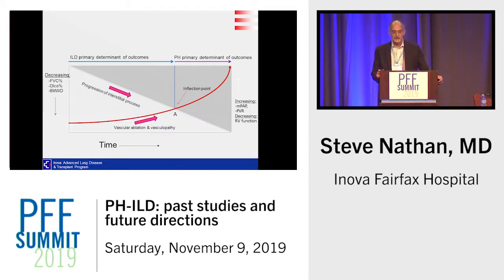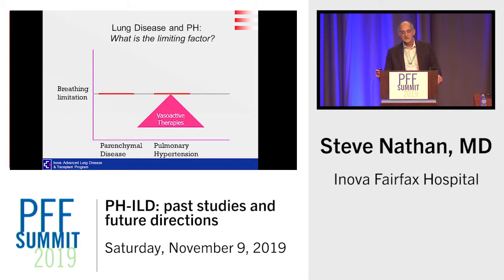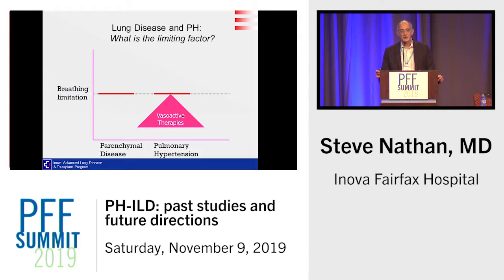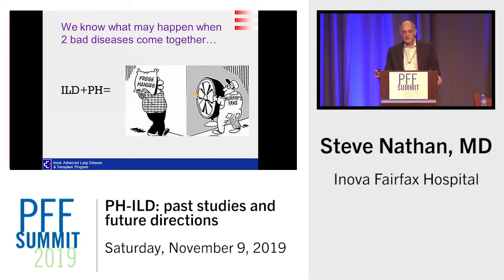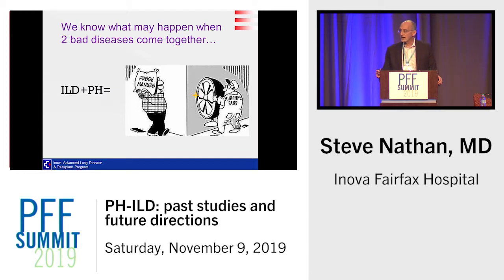This demonstrates the concept that the ILD may be driving outcomes initially, but patients reach an inflection point where pulmonary hypertension becomes the driver. The question is: can we help patients with both breathing limitation from interstitial lung disease and pulmonary hypertension — if PH is the limiting factor, can we treat it so the parenchymal lung disease becomes the limit instead? We know that combining two bad diseases — ILD plus PH — results in very poor outcomes.